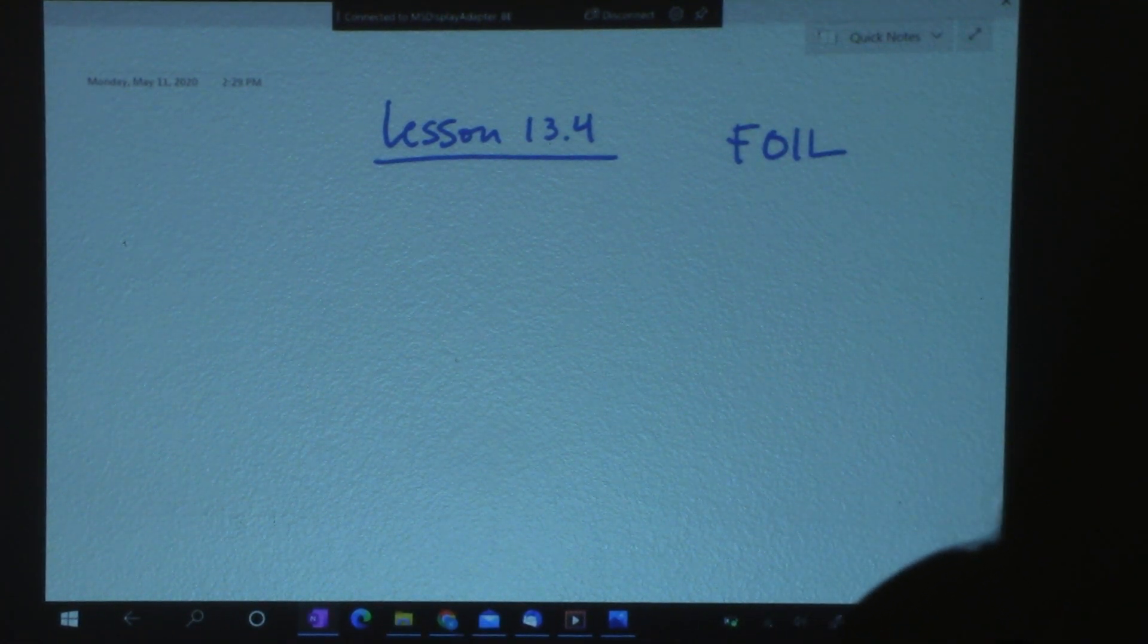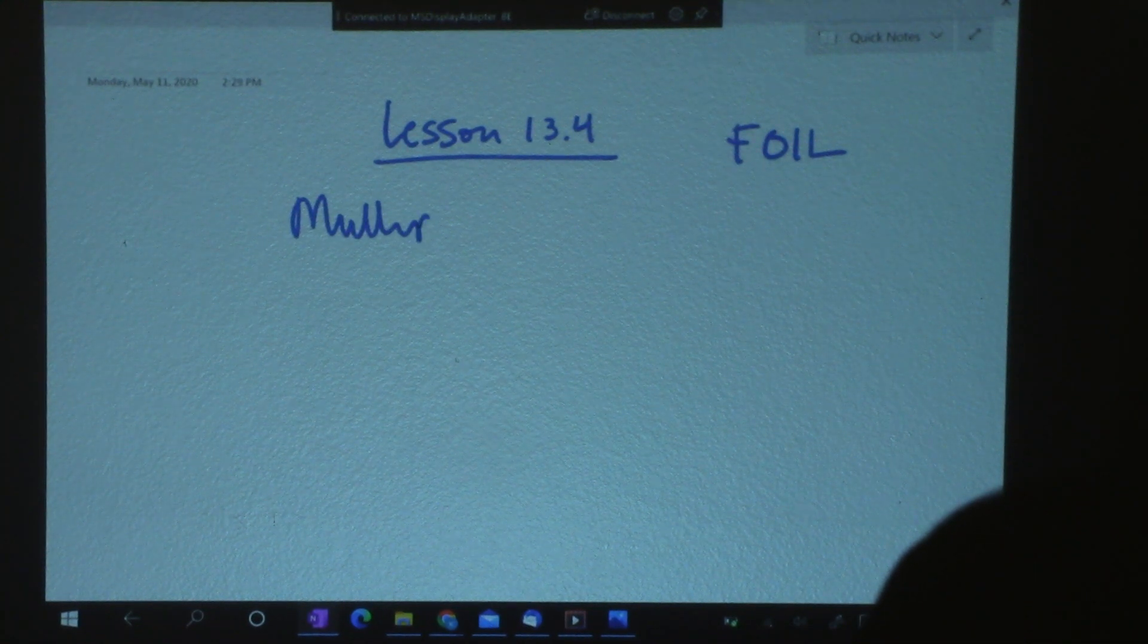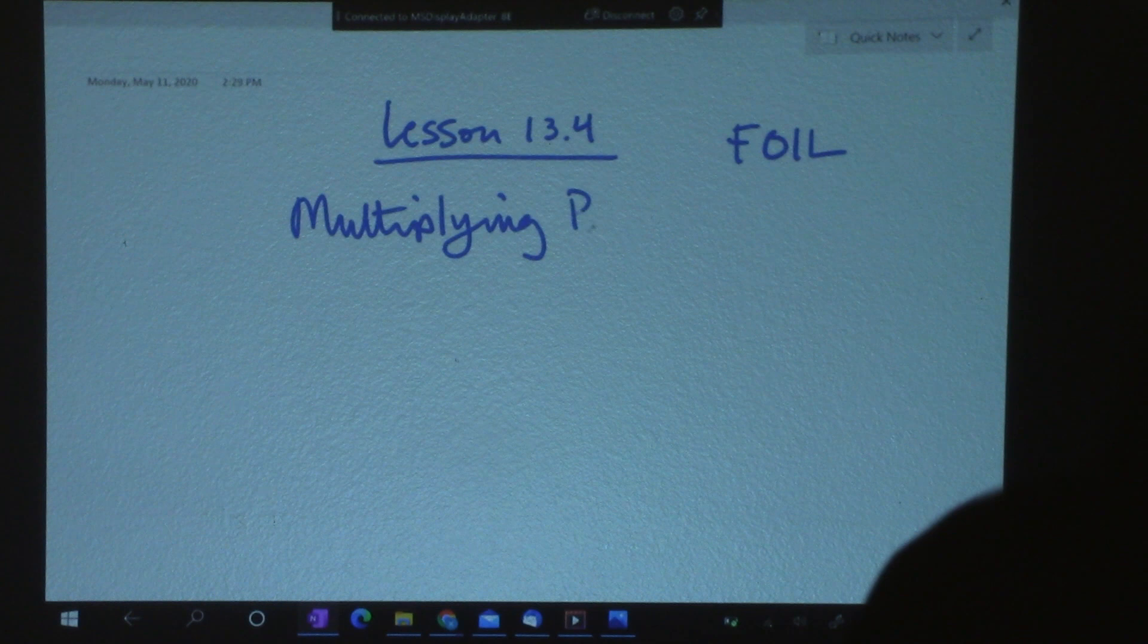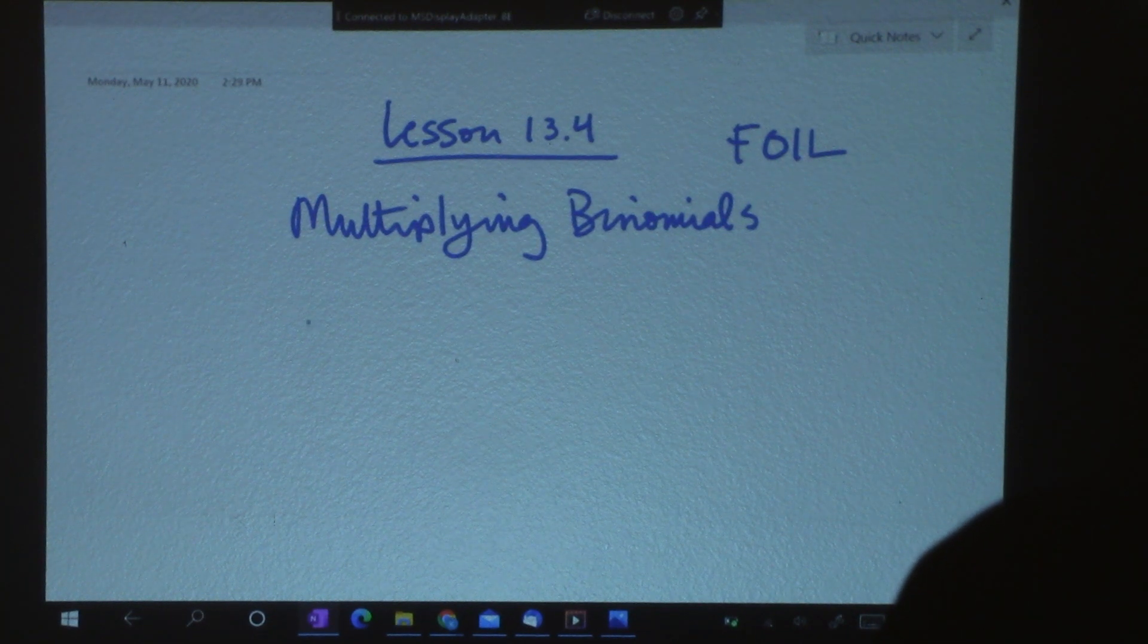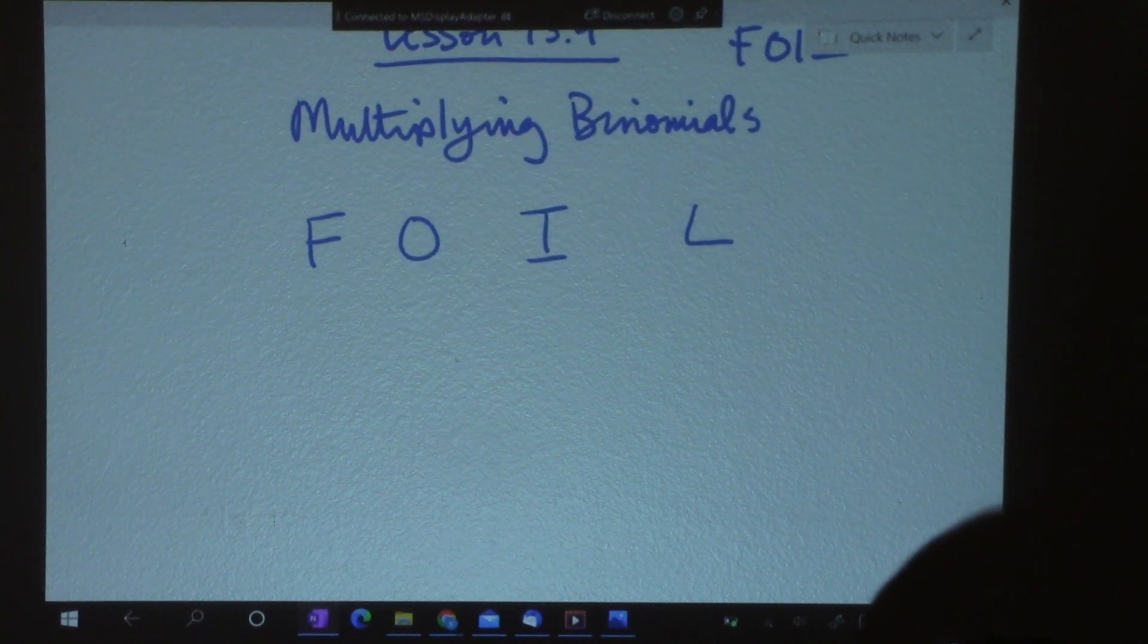Alright, so what we're doing is we're multiplying binomials. When you have FOIL, we use that word because it stands for the four steps of what you're gonna do.